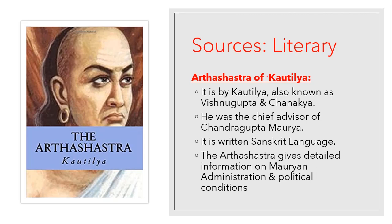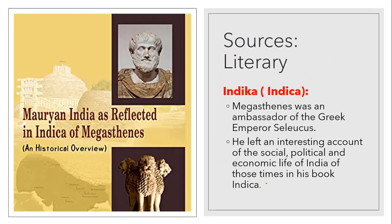In a structured question on literary sources, you must write these four points minimum: Arthashastra was written by Kautilya, also known as Vishnagupta and Chanakya; he was the chief advisor of Chandragupta Maurya; he wrote in Sanskrit language; and the book gives detailed information on Maurya administration and political condition. That's your four-mark answer.